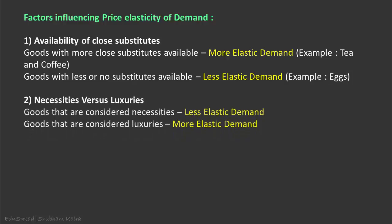The second factor is the nature of the good. Goods that are considered necessities have less elastic demand as compared to goods that are considered luxuries. It is difficult to give up consumption of a necessary good by a large amount when its price goes high — for example, salt. On the other hand, if the good is a luxury, then an individual has more flexibility to change his purchasing habits in response to a price change.